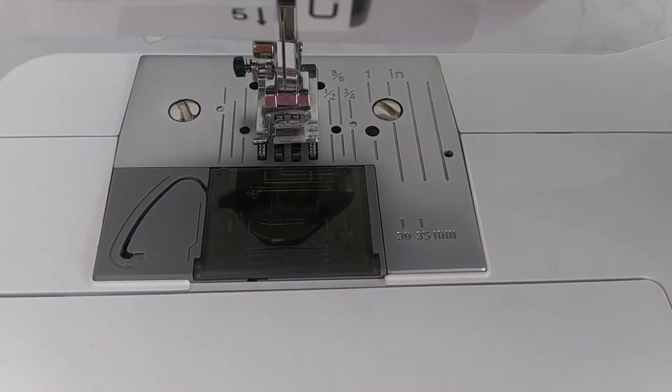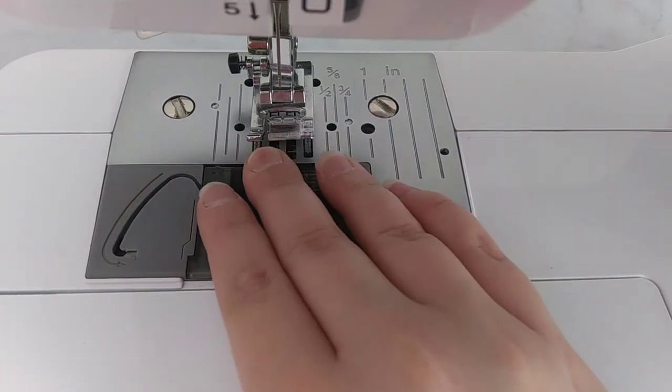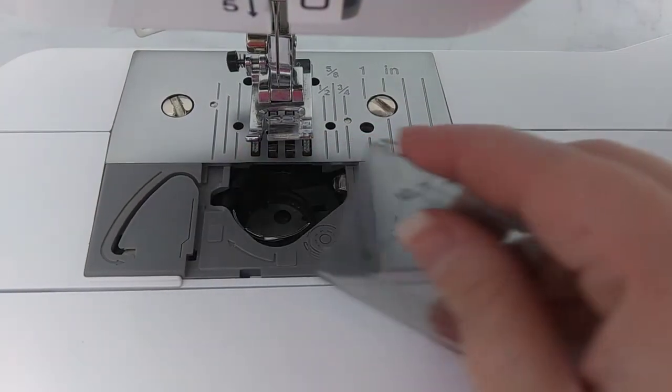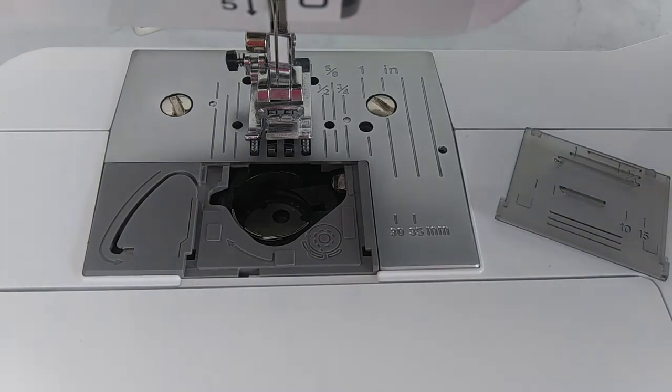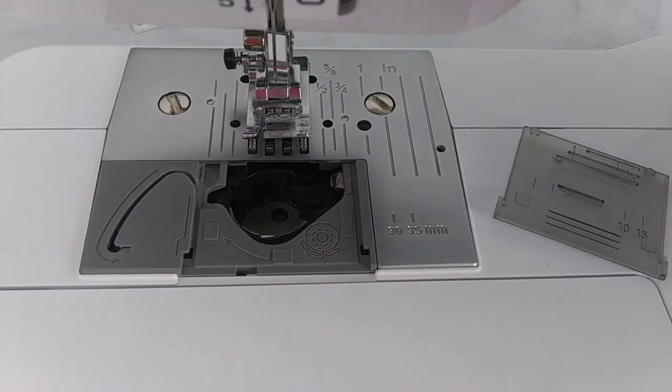Okay, so now it's time to put the bobbin in the sewing machine. All you do is take off the top cover for your bobbin, and follow along on the diagram here of how to place your bobbin.